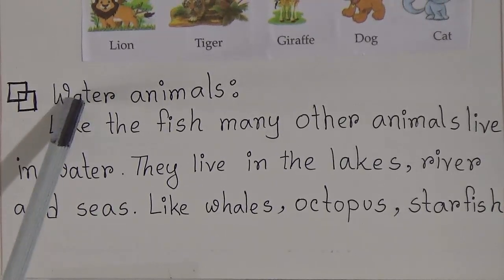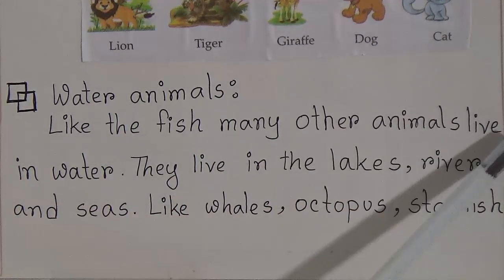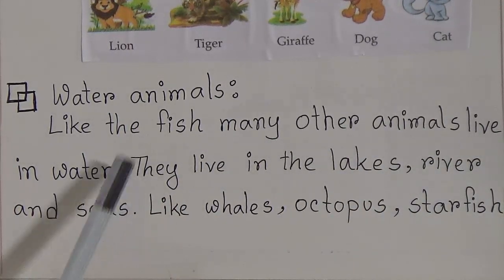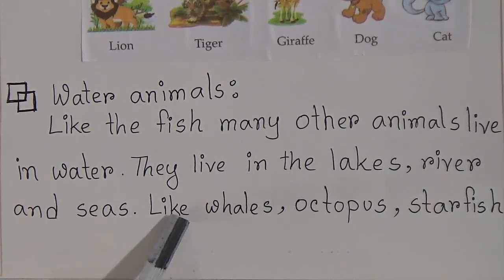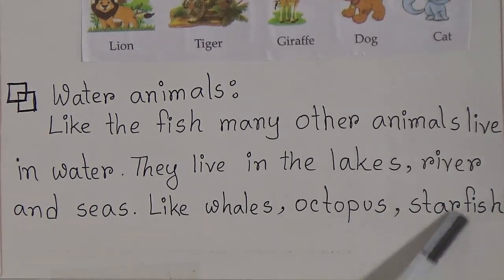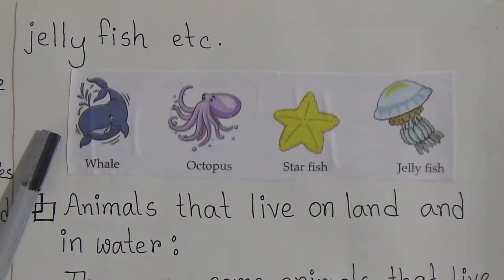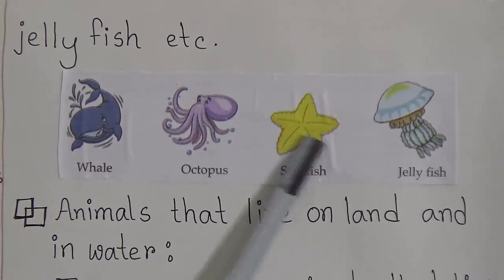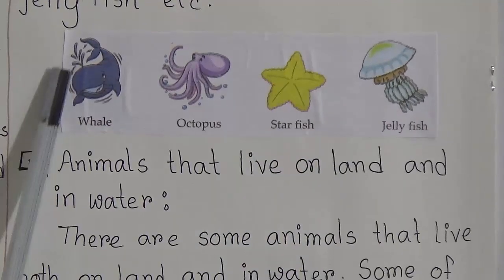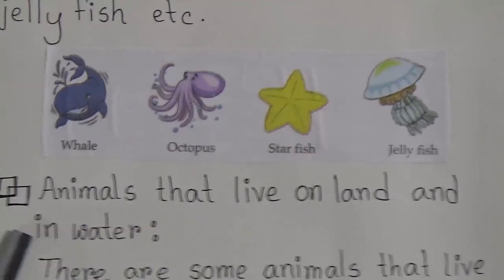Now the next topic is water animals. Many animals like fish live in water — in lakes, rivers, and seas. Examples include whale, octopus, starfish, and jellyfish. Here are some pictures of water animals: that is a whale, that is an octopus, that is a starfish, and that is a jellyfish. All live in water, that is why they are called water animals.